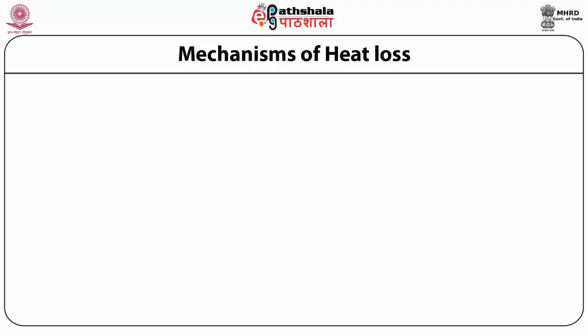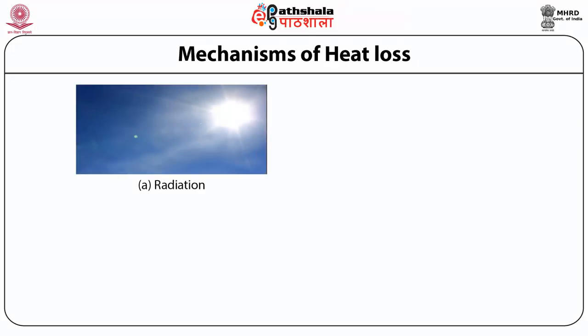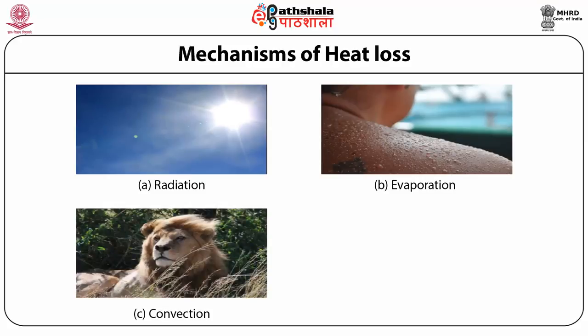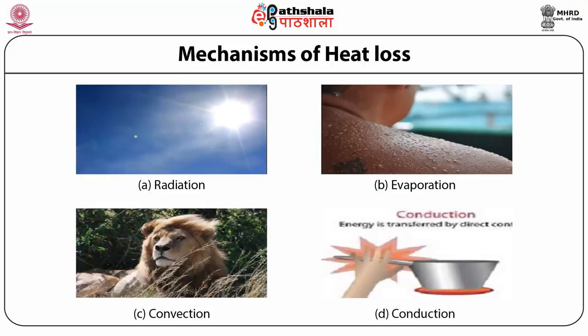The four major mechanisms of heat loss are: radiation (such as from the sun), evaporation (sweating on a hot day), convection (convection currents in the air), and conduction (direct contact with a surface that conducts heat away).